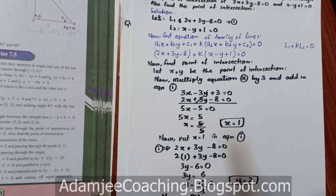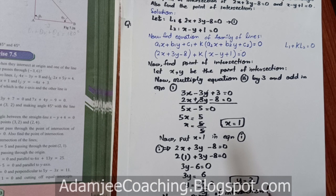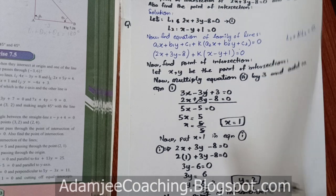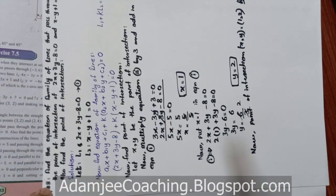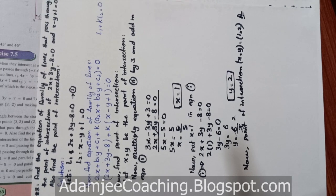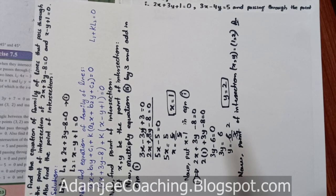Point of intersection is (x, y) equals (1, 2). This is the answer to this question. I hope you understood the question. This was Exercise 7.5, question number 8. Please like and subscribe to the channel, and do comment in the comment section if you enjoyed the video. See you in the next video with the next question. Allah Hafiz.